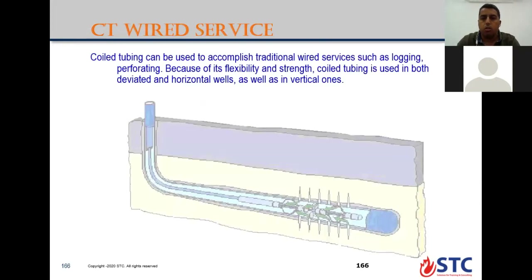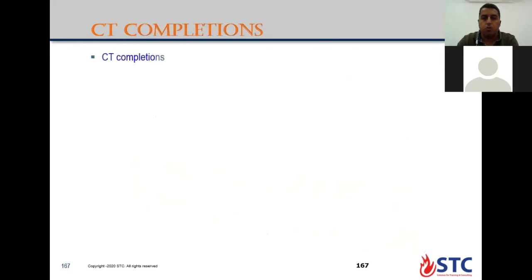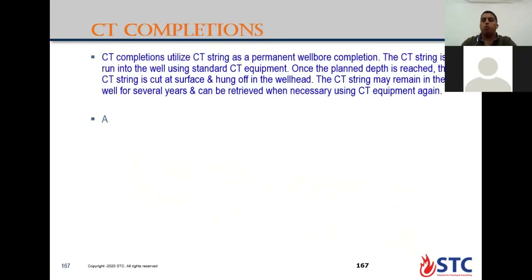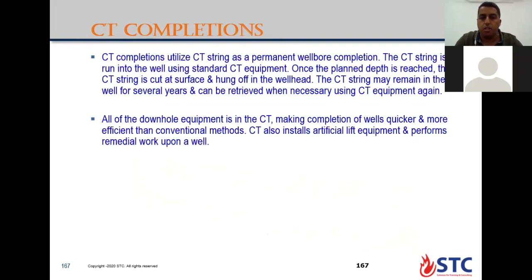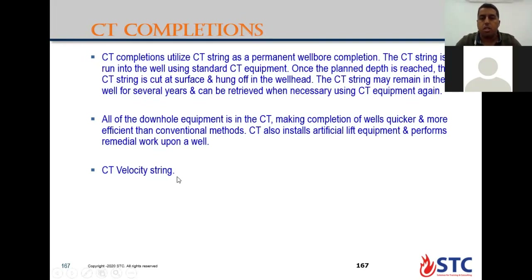This is a logging tool to run with e-coil — you have a line inside the coil tubing connected to the bottom hole assembly to provide logging or fishing logging operation or perforation inside vertical or highly deviated wells. This one is CT completion where we use coil tubing from surface to bottom instead of the conventional completion string. This makes well completion quick and easy because you don't need to make a lot of connections while running inside the hole.